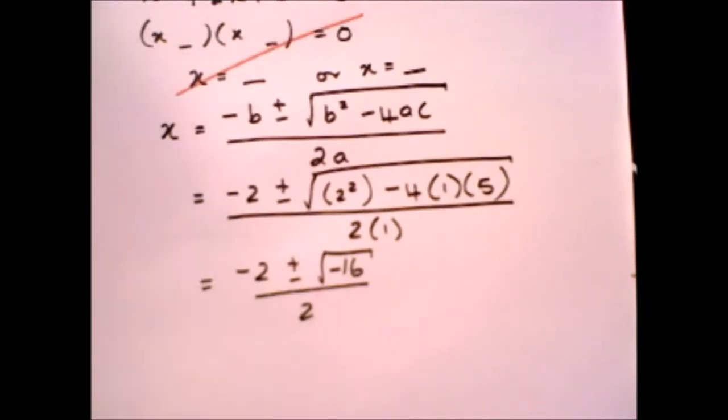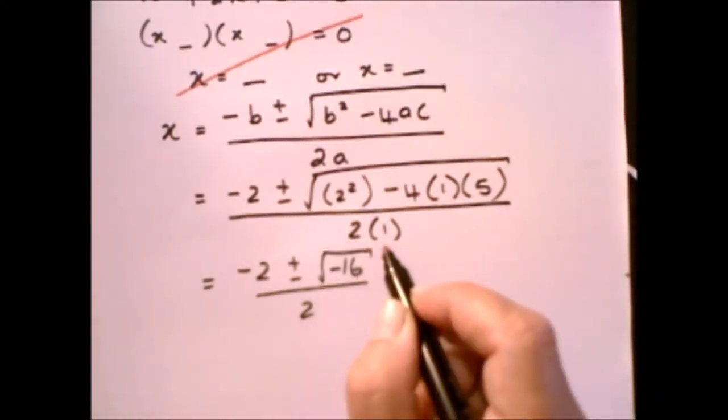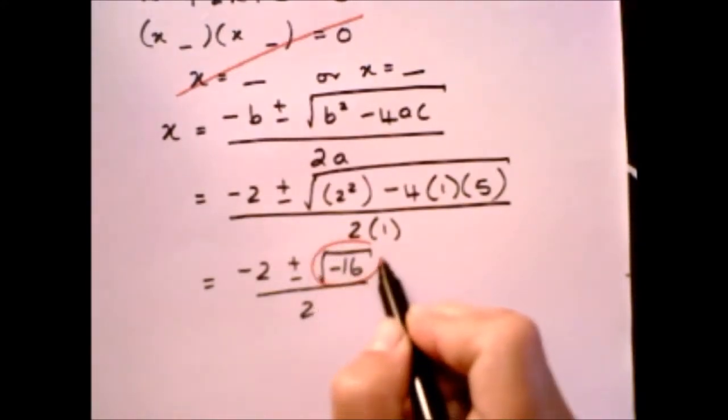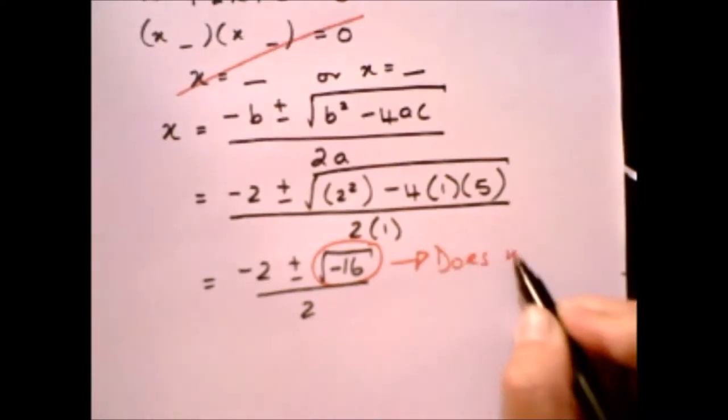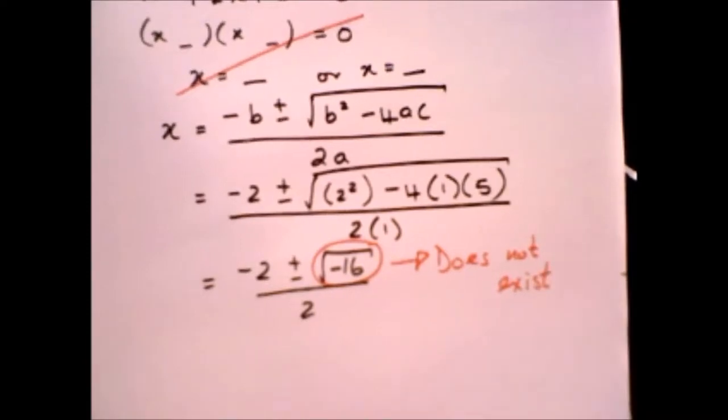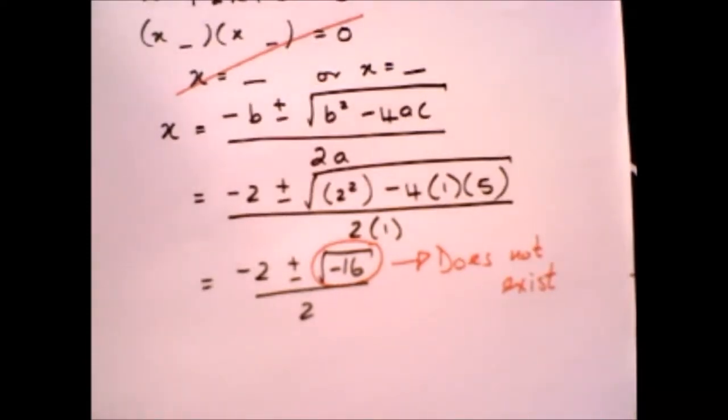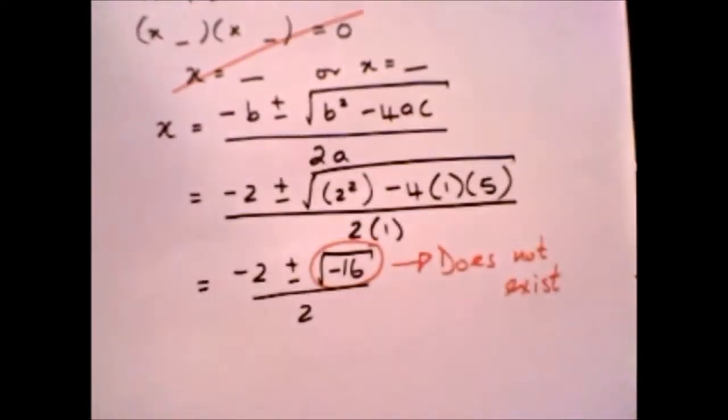If you were in school they would have told you that this does not exist because of the square root of minus 16. The only reason you couldn't find the value for the square root of minus 16 was because you were working in the real number system. So what we're going to do is expand the number system that we're working with to include what we call imaginary numbers.